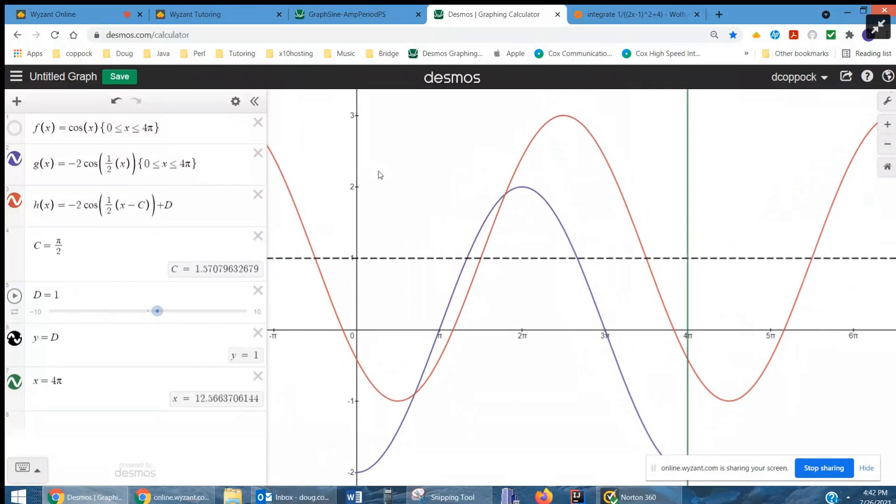Okay, so that's a quick overview of what those numbers do to the graph of what we call the parent function: amplitude, period, phase shift, and vertical shift. There you go, hope that helped. If you have any questions, post a comment.